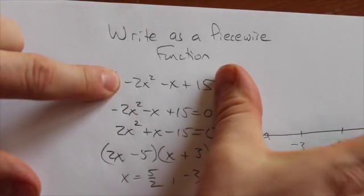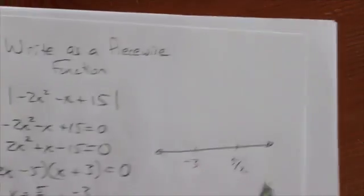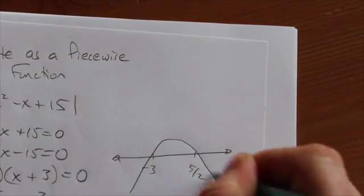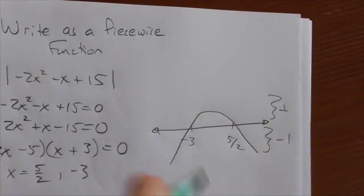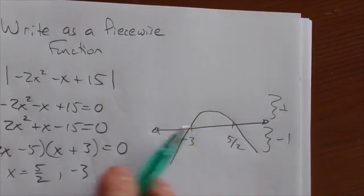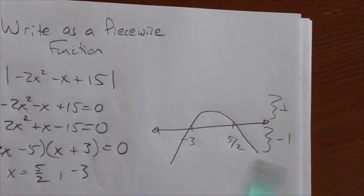If I ignore the absolute values right now, I see that I've got a parabola that opens down. So that means the parabola is doing something like this. It's positive here and it's negative here. It's positive in this section right here as long as it's above the x-axis and it's negative down here.